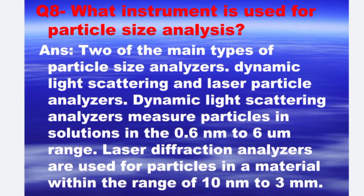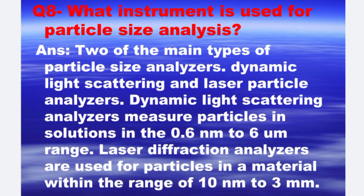Next is: what instrument is used for particle size analysis? The answer is, two of the main types of particle size analyzer are dynamic light scattering and laser particle analyzer. Dynamic light scattering analyzers measure particles in solution in the 0.6 nm to 6 micrometer range. On the other hand, laser diffraction analyzers are used for particles in a material within the range of 10 nm to 3 mm.